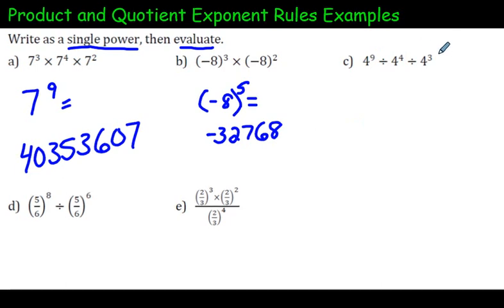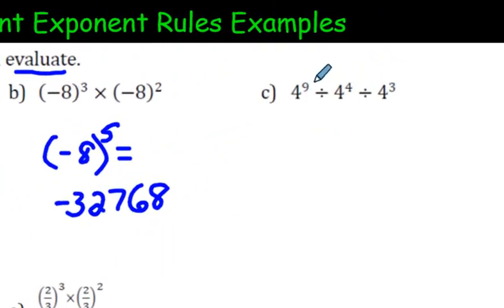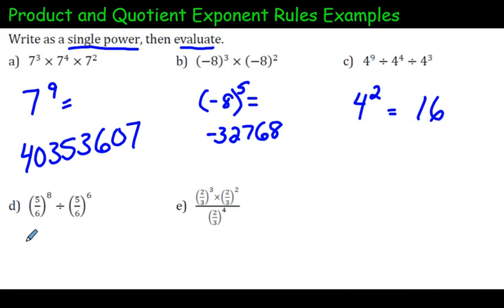Remember when we're dividing, we're subtracting the exponents. So move left to right, 9 minus 4 is 5, and 5 minus 3 is 2. And if we evaluate that, we get 16.